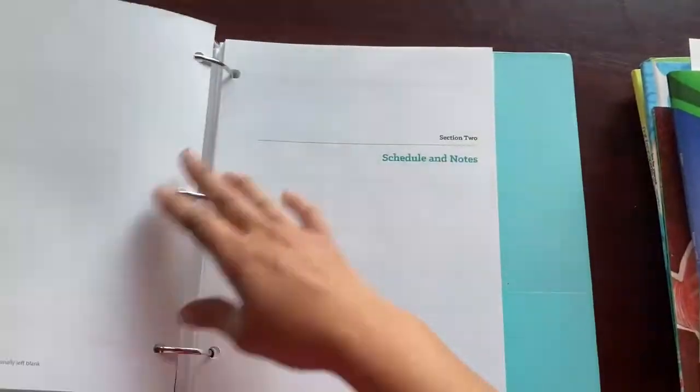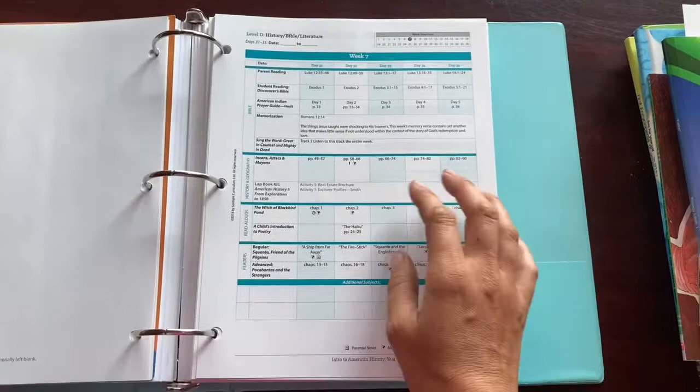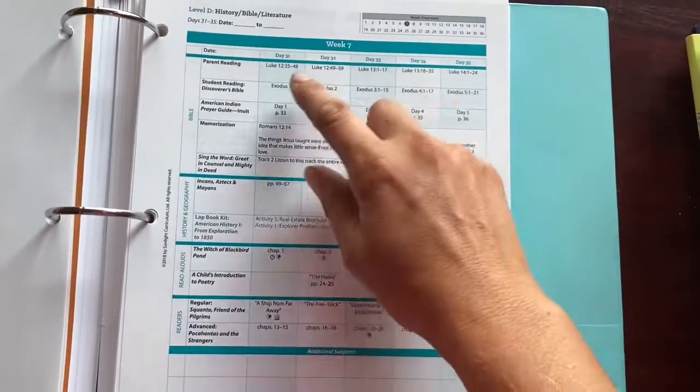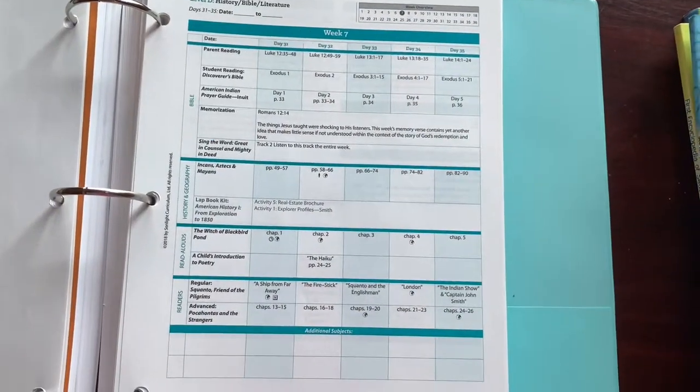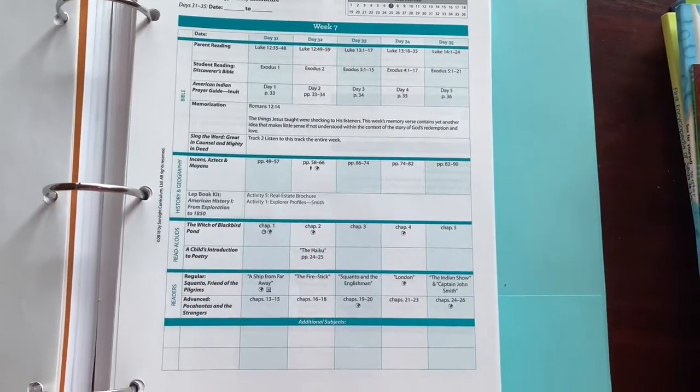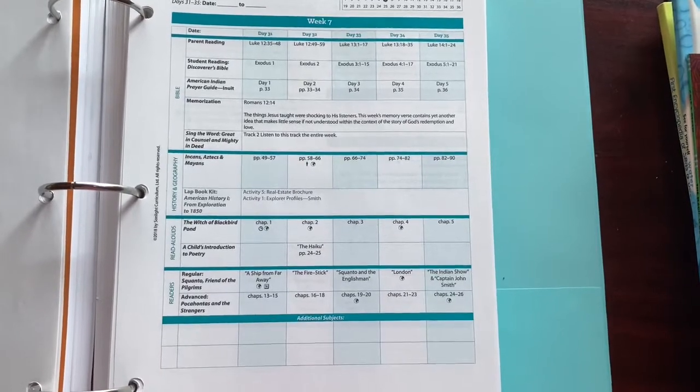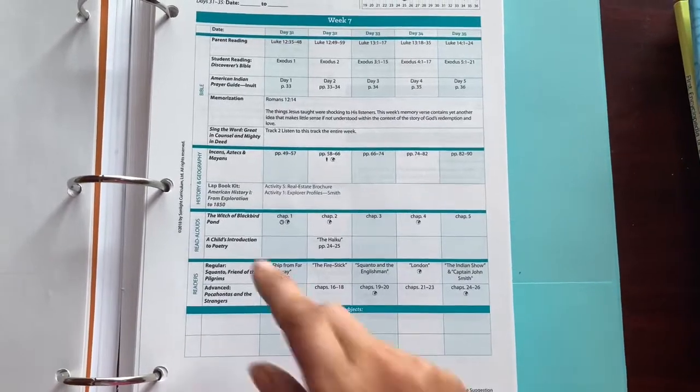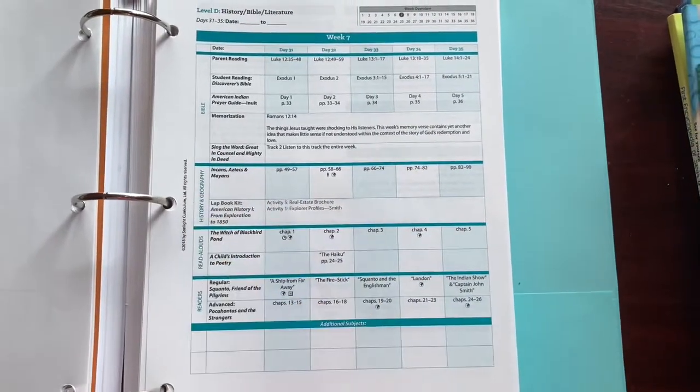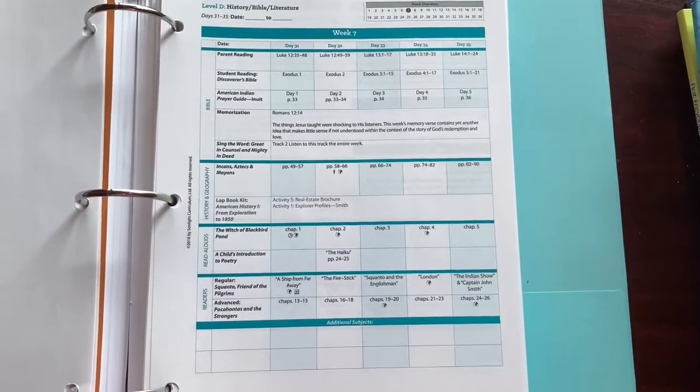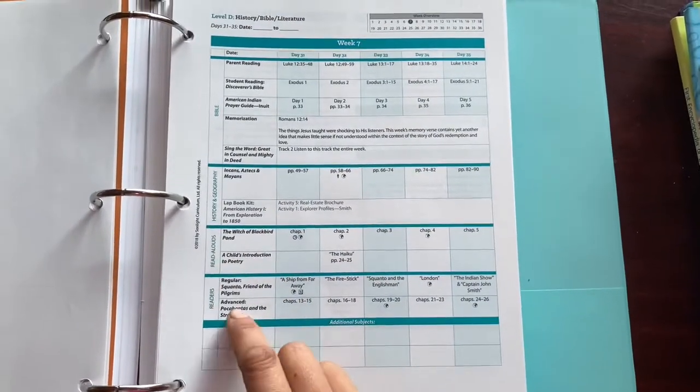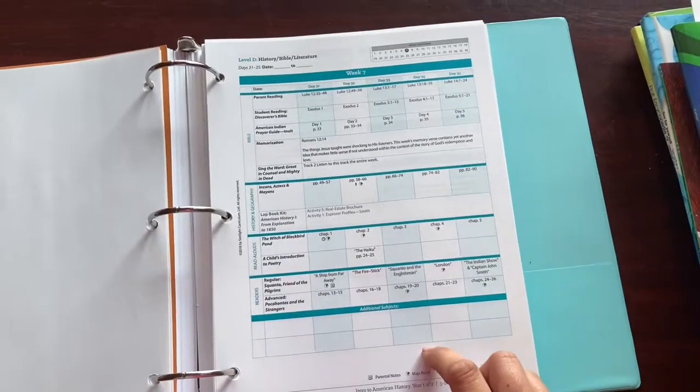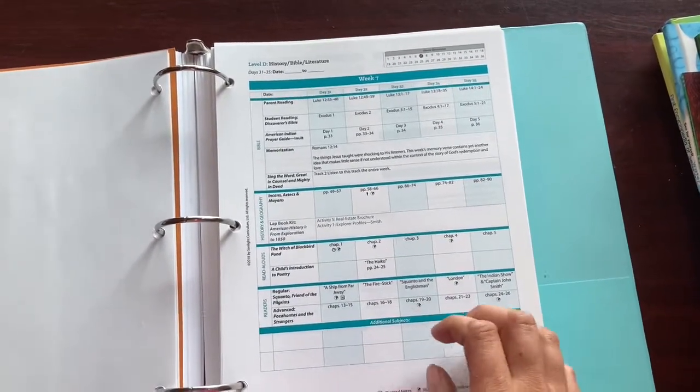They give you a schedule for every week. For Bible, they have quite a bit to do. There's some parent reading, student reading. He has an American Indian prayer guide this year and he's memorizing some Bible verses. Then moving down to the history section, there are books there that he would read. There are read-alouds that I read to him and readers that he reads on his own. You can choose a four-day or a five-day.